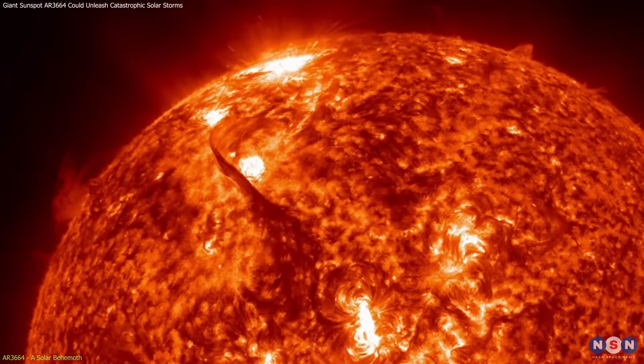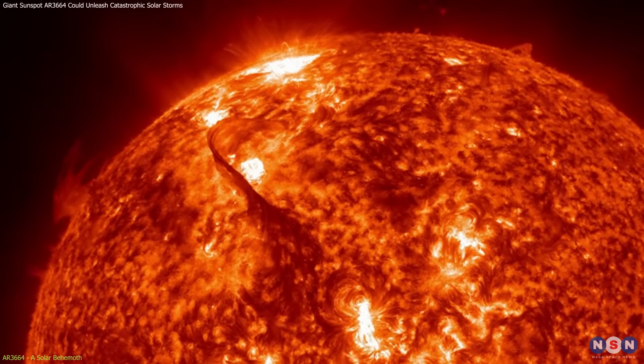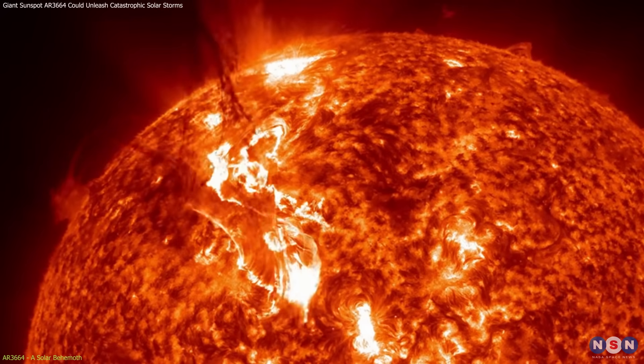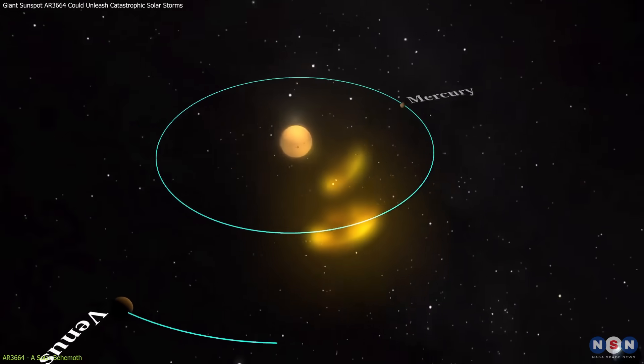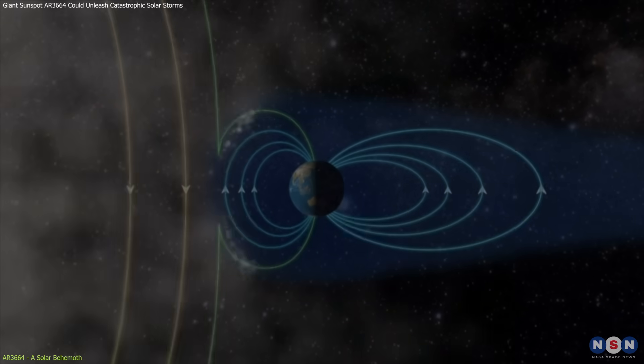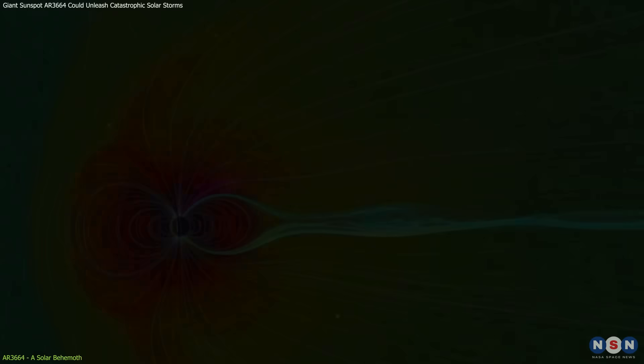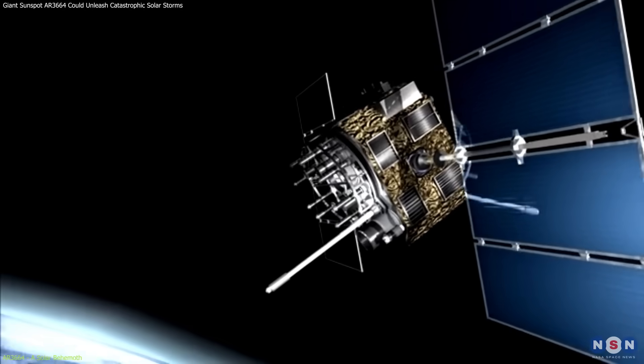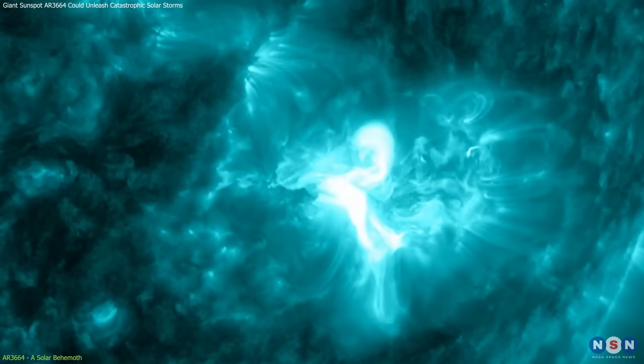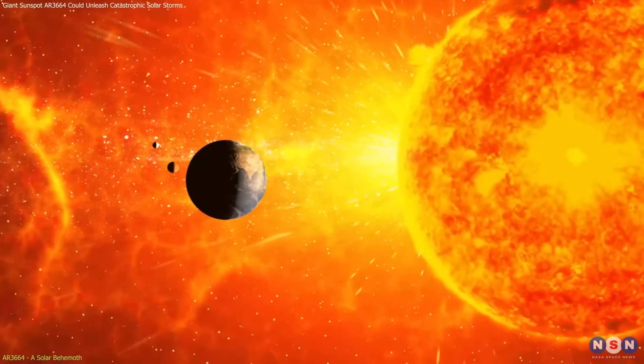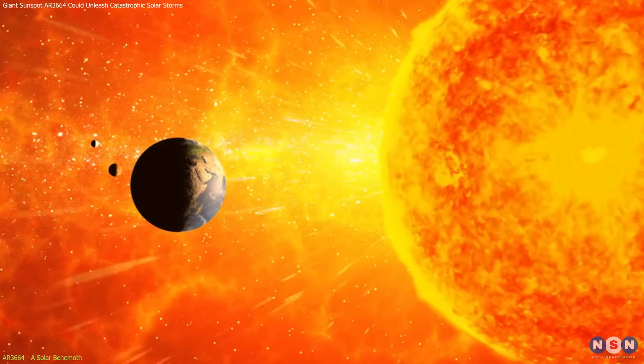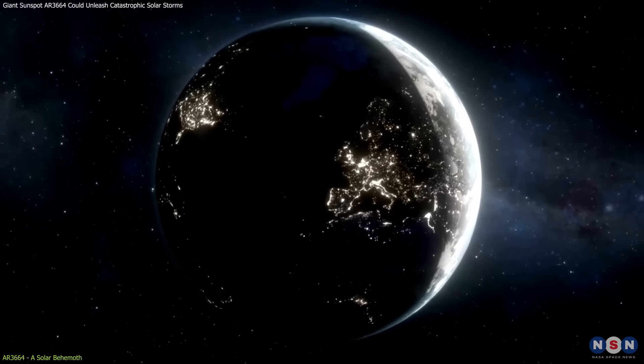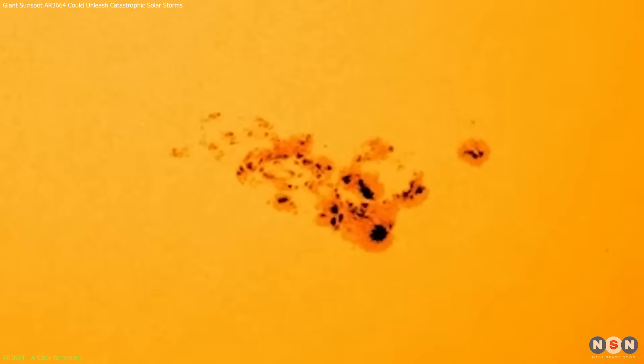These spectacular solar events occur when large bubbles of gas and magnetic fields are ejected from the sun's corona. Depending on their path through space, these CMEs can collide with Earth's magnetic field, sparking geomagnetic storms that can disrupt power grids and satellites. The recent activities of this sunspot remind us of our star's potential to affect modern technology profoundly.